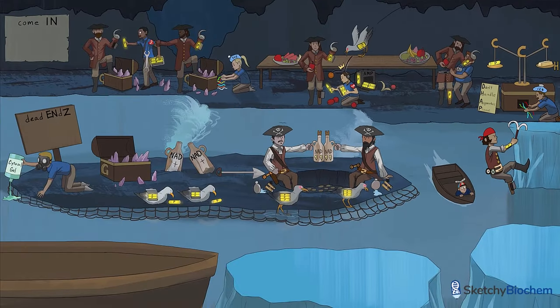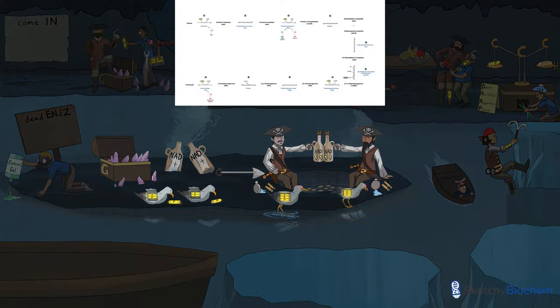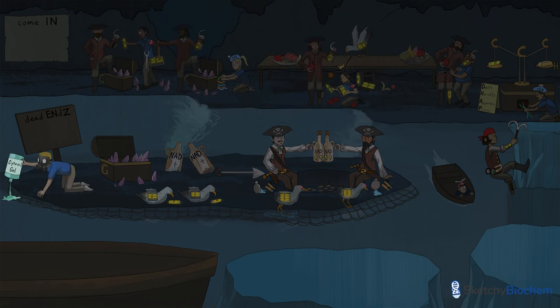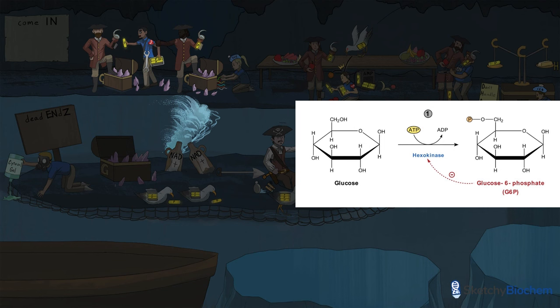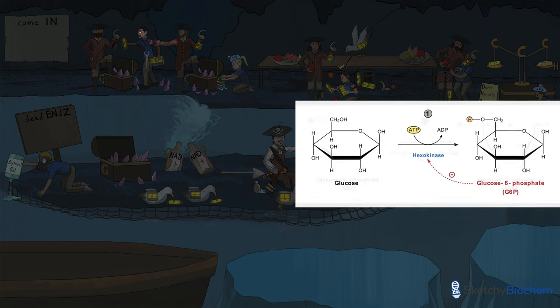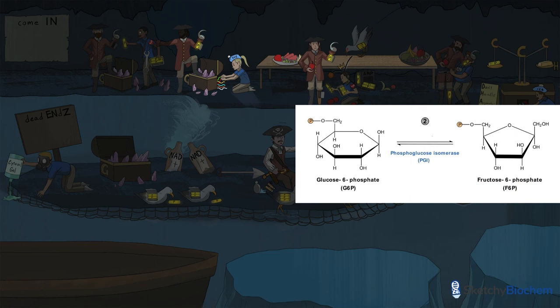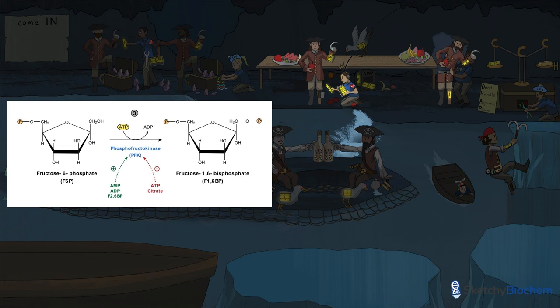Alright, let's quickly summarize. Glycolysis produces 2 pyruvate, 2 NADH, and 2 ATP from 1 glucose. Glycolysis occurs in the cytosol. First, hexokinase irreversibly uses ATP to phosphorylate and trap glucose inside the cell to make G6P. G6P inhibits hexokinase via product inhibition. Next, phosphoglucose isomerase turns G6P into F6P. Then PFK1 turns F6P into F1,6-BP by using ATP to add a phosphate group.